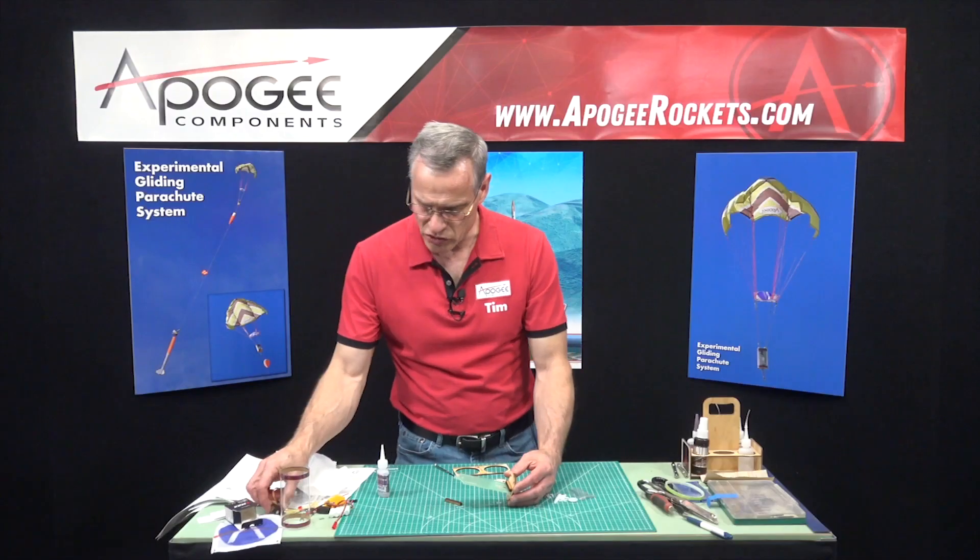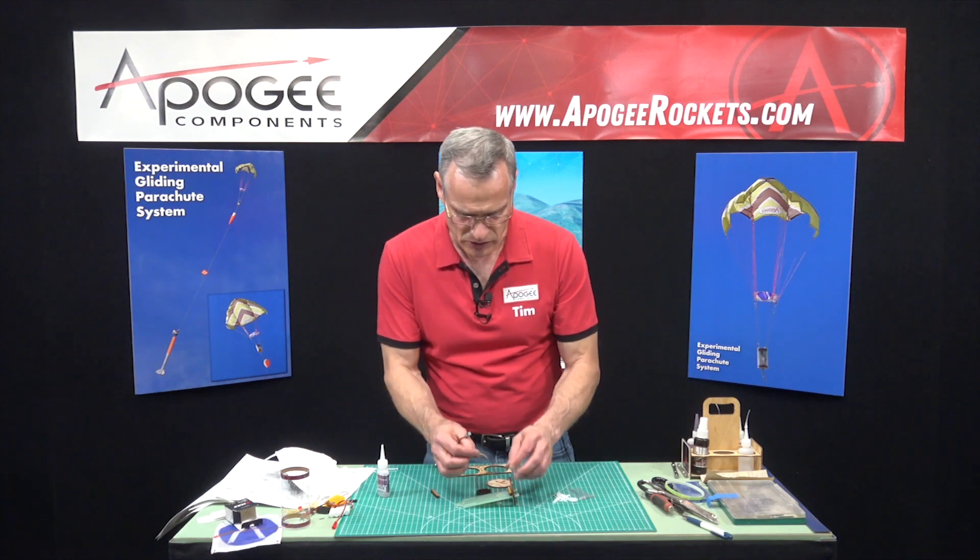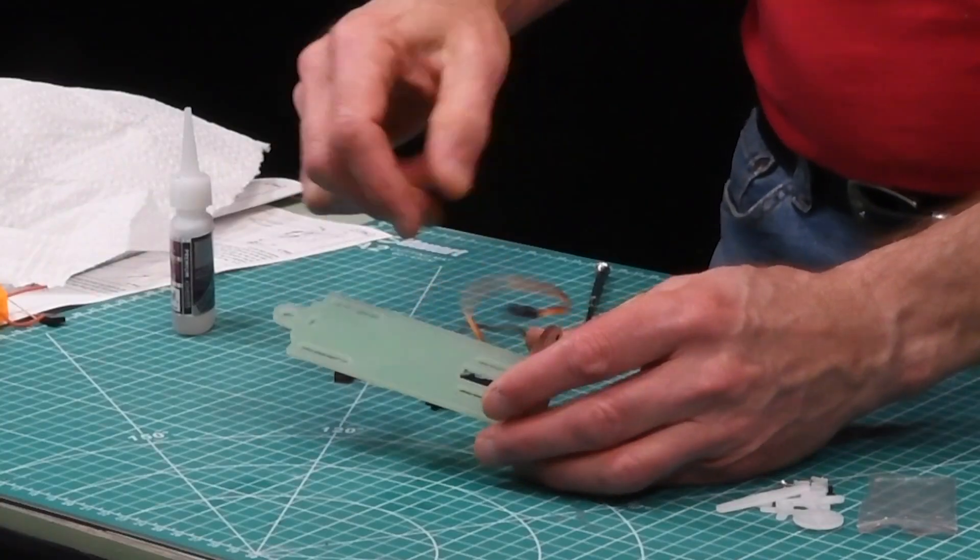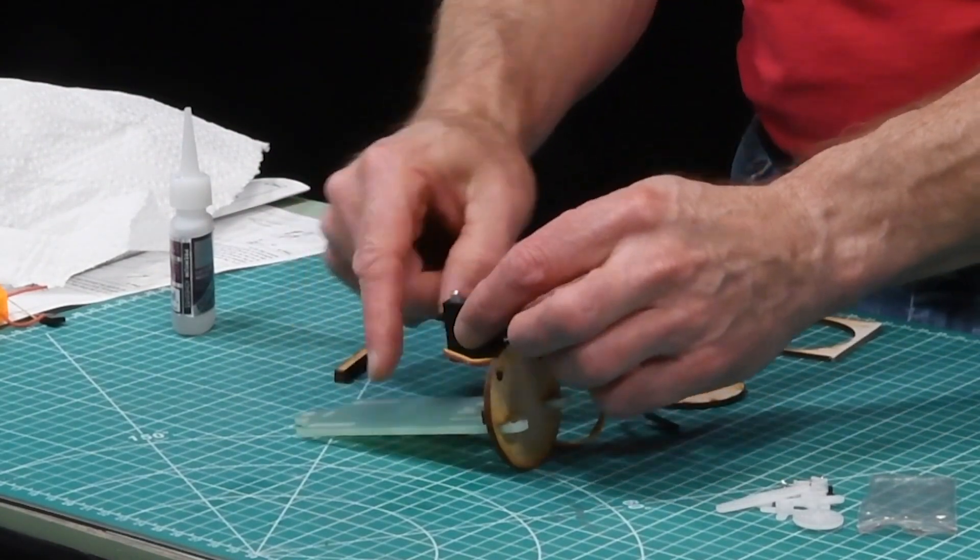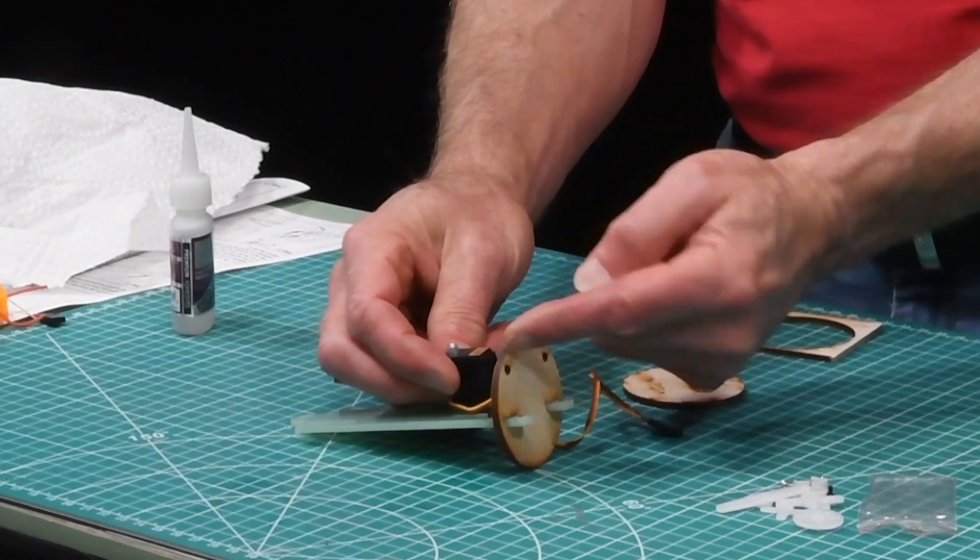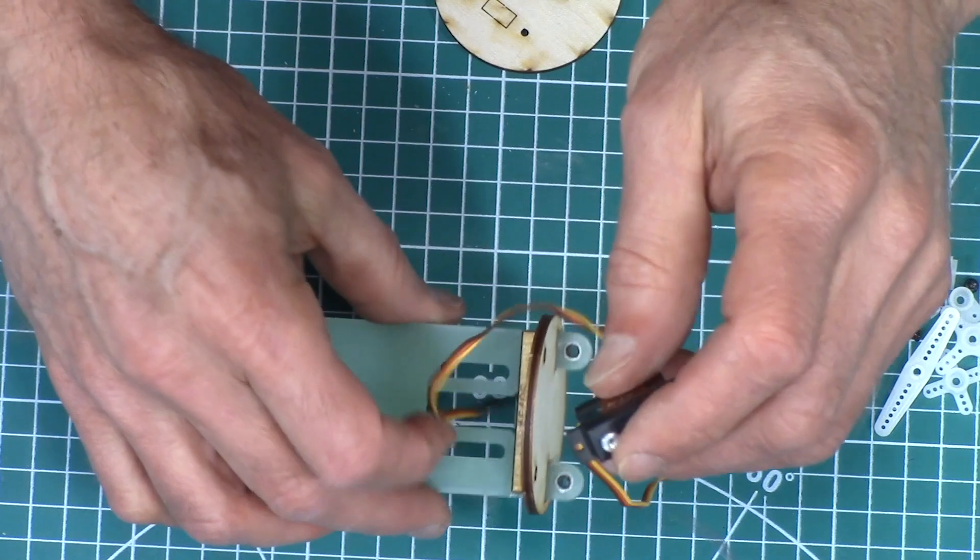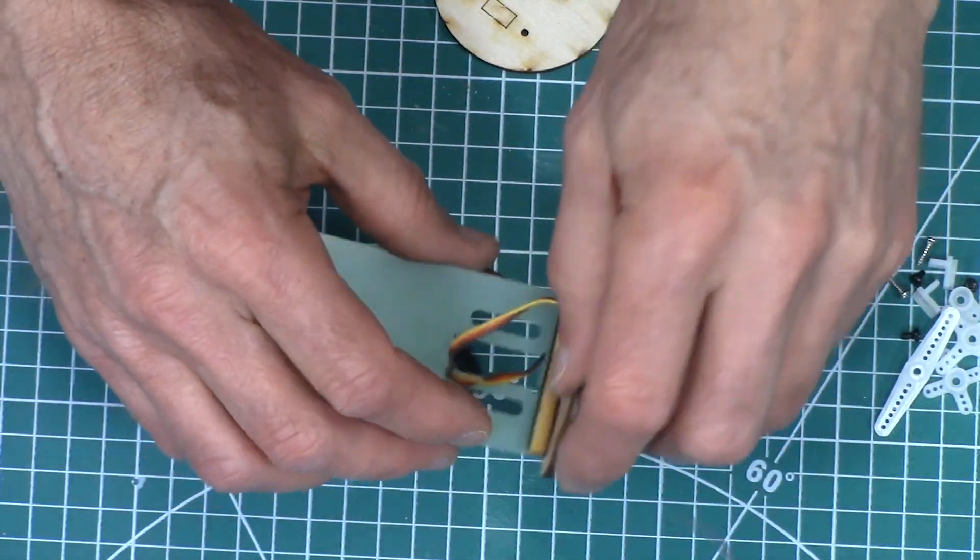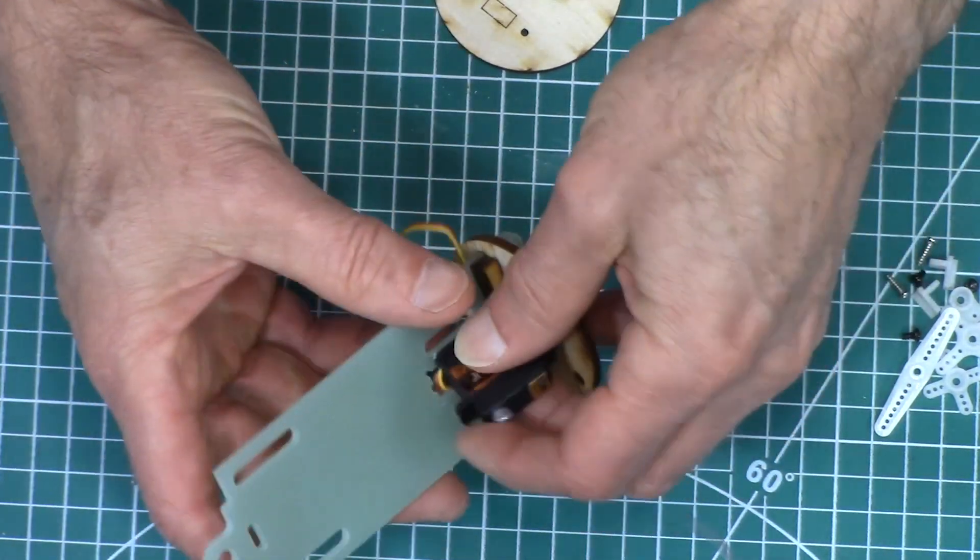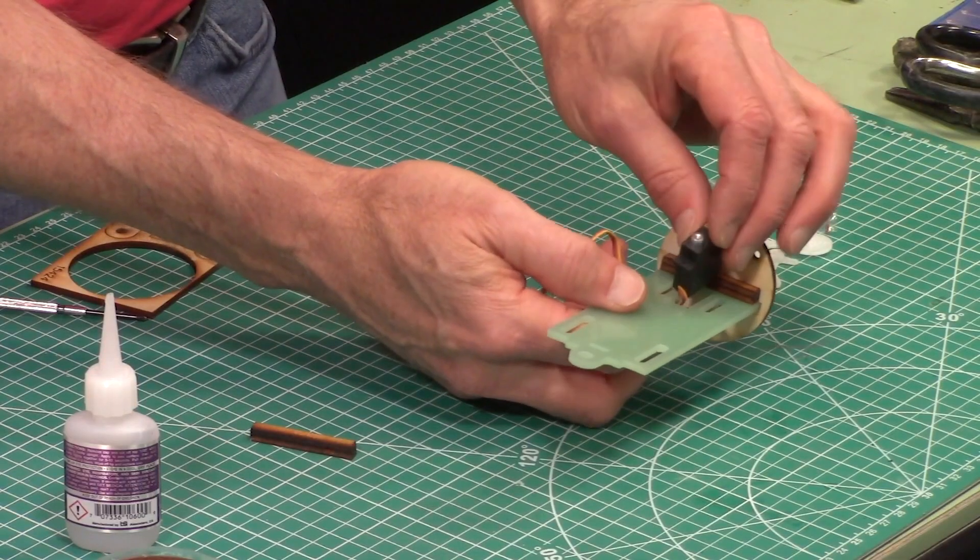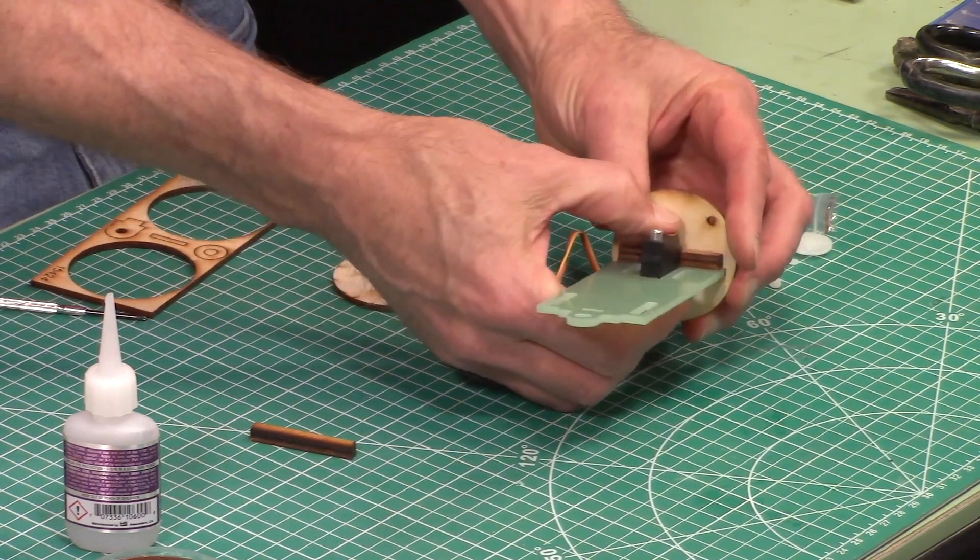Now we're going to take the servo and the servo is going to fit into this little slot. So we want this spine up here up and then we actually want it this way as far away from the bulkhead as possible. So first route the wire down through it. And then you got to kind of tilt it sideways so you can get the wire through without crimping it. And then push it down.